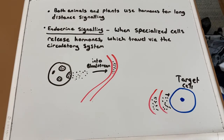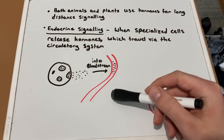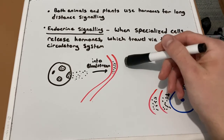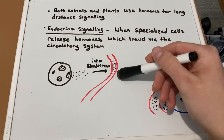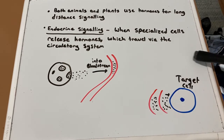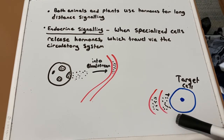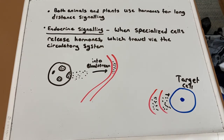Both animals and plants use hormones for long-distance signaling, also known as endocrine signaling. Specialized cells release hormones that travel throughout the body via the circulatory system, eventually reaching target cells in different parts of the body. One example is insulin, which is produced by the pancreas, travels in the bloodstream, and helps store excess glucose found in the body after one eats. Nerves can also be considered long-distance signaling, since the signal can travel through multiple nerves — so synaptic signaling is considered a long-distance signal as well.